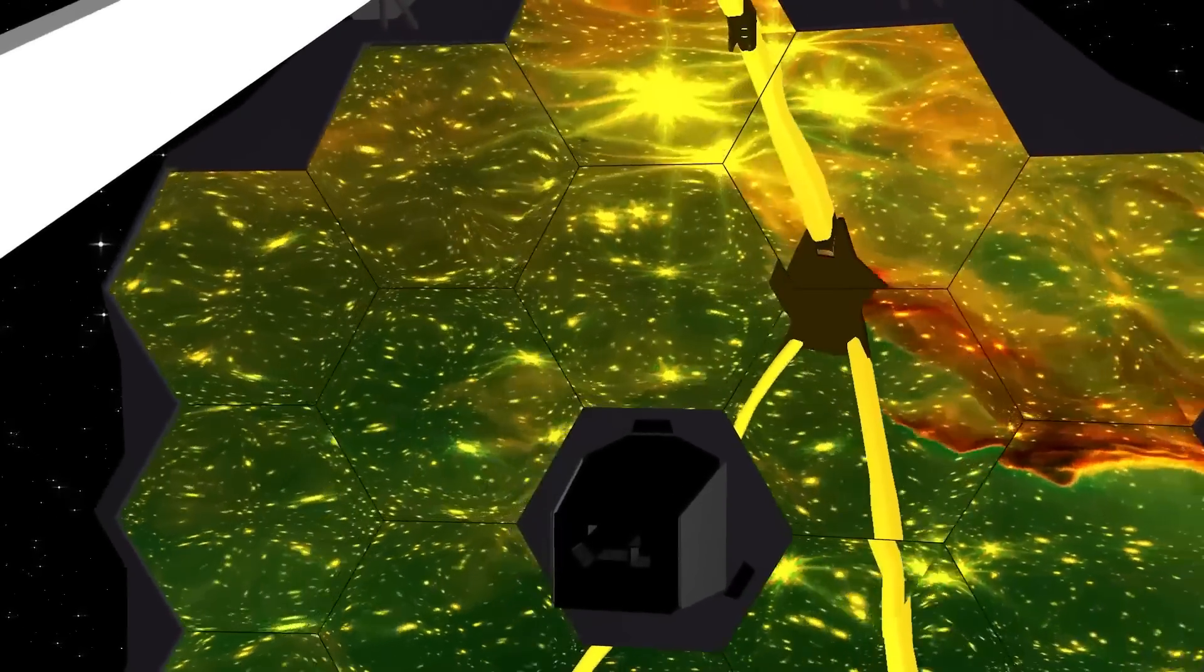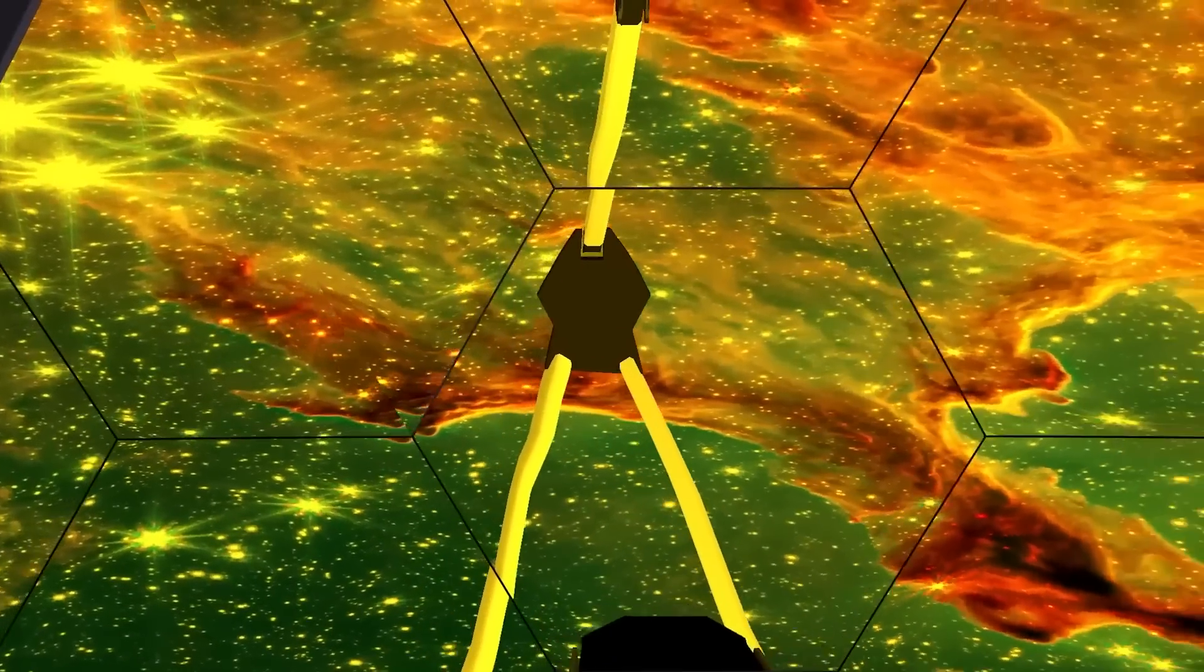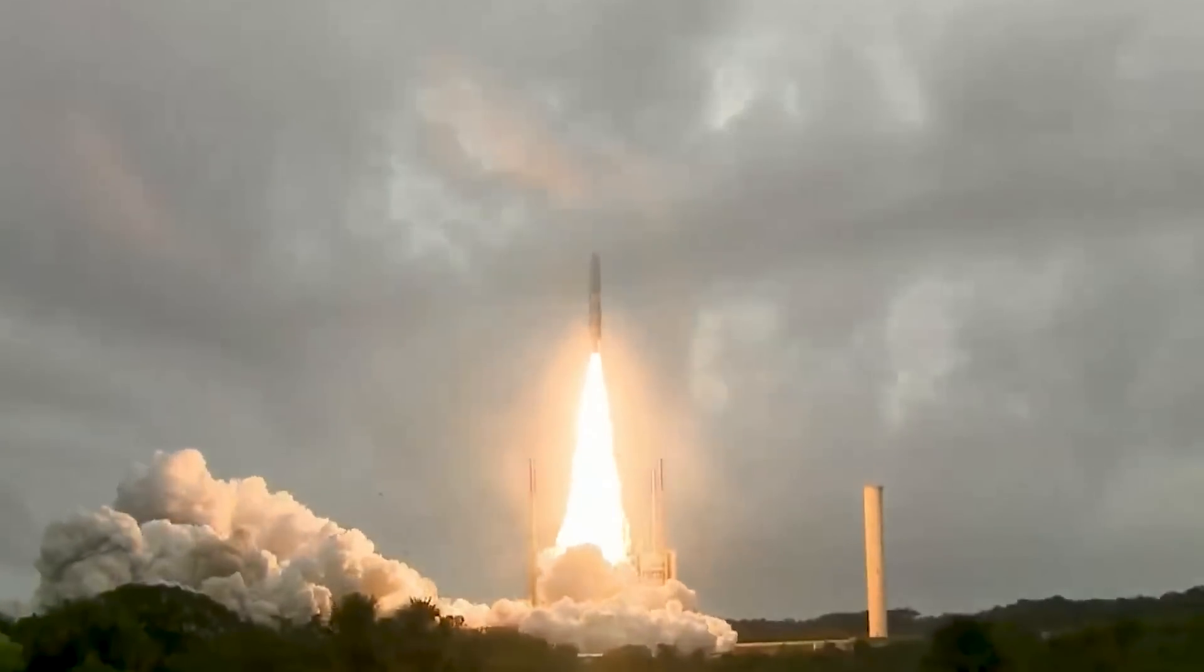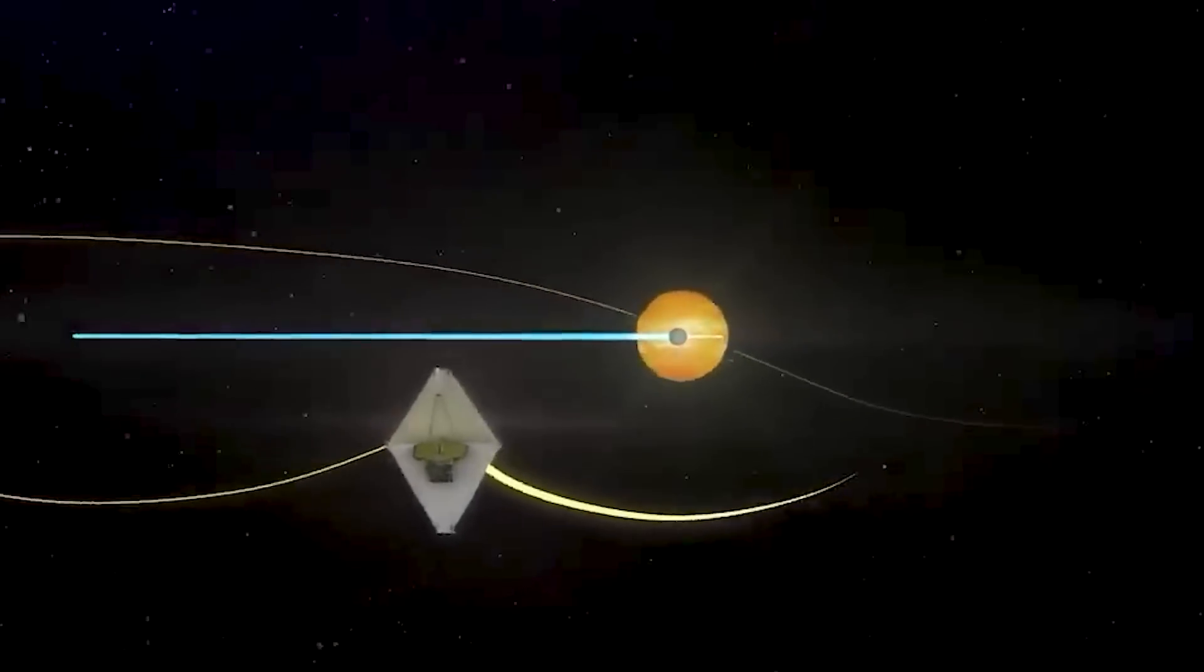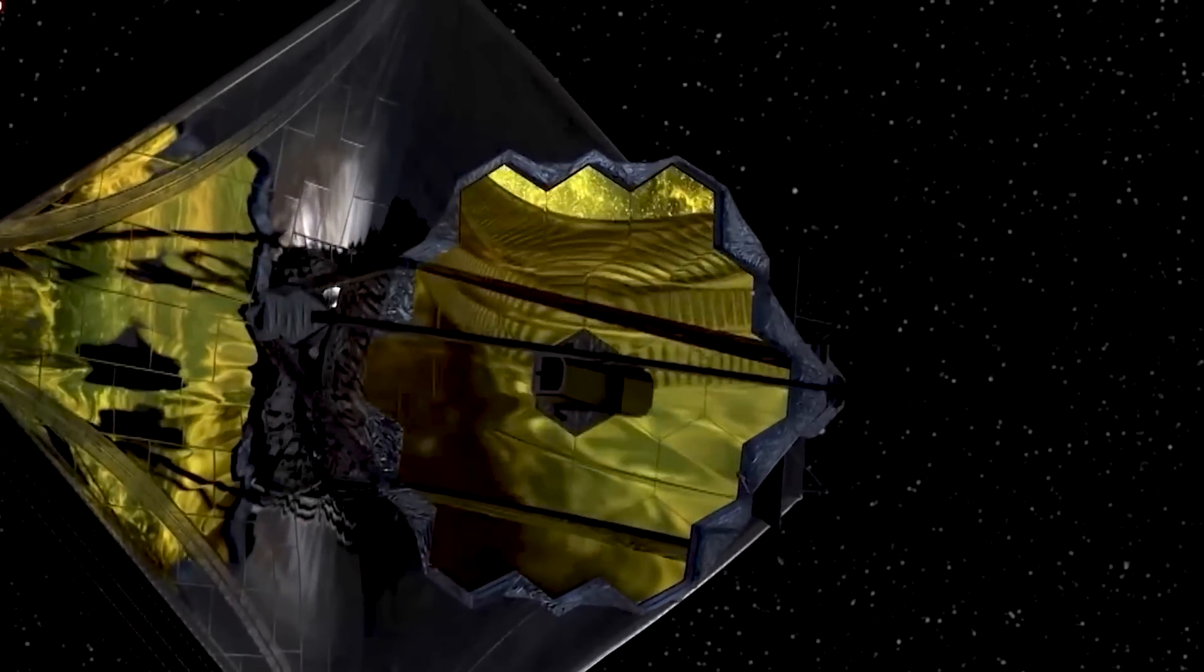The JWST stands tall as the most powerful and sophisticated observatory ever built to study space. It embarked on its outer space journey in December 2021 and gracefully settled into its final orbit around the Sun-Earth Lagrange Point 2 in January 2022.